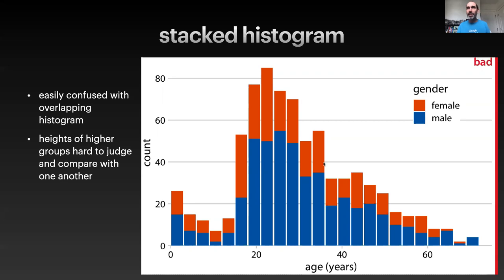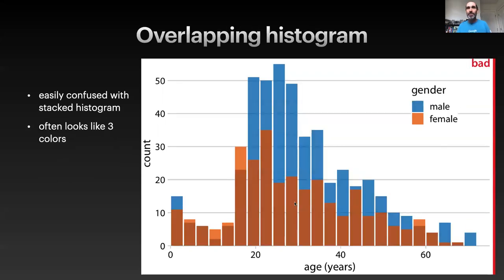You look at the red female data and it's really kind of hard to figure out what the shape of that distribution actually is. The other disadvantage of stacked histograms is they can easily be confused with overlapping histograms, which are the next thing I want to talk about.